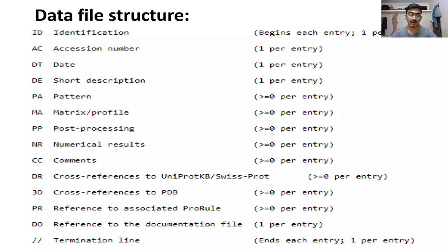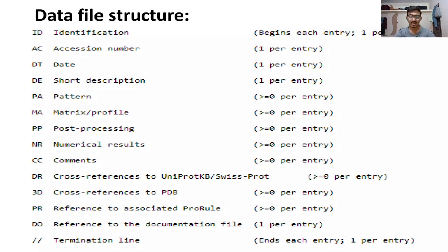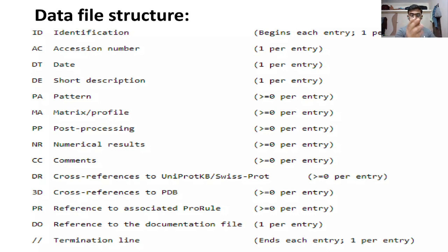The data file structure includes fields such as ID for identification, accession number, date, short description, and the actual content. As we go on, there are fields for PA (pattern), matrix, and profile — all the data that a protein consists of is stored in these data file structures.